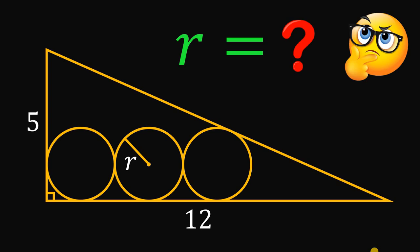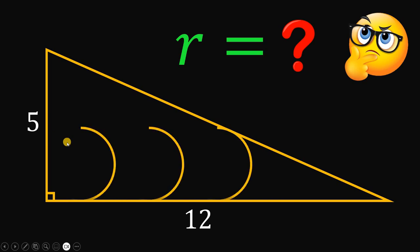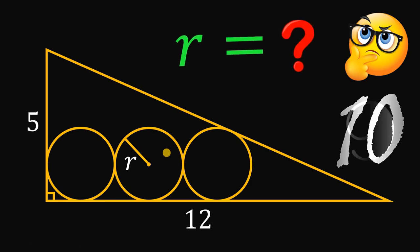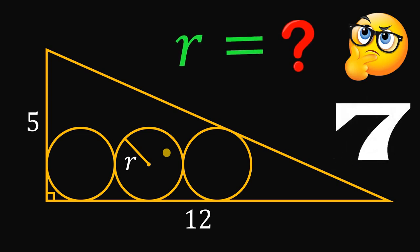Can you solve this geometry challenge? Here's the question: given this rectangle with base 12 units and height 5 units, draw three congruent circles inside of it. The question is: what is the length of the radius of these three congruent circles? You can pause this video if you want to give this problem a try.